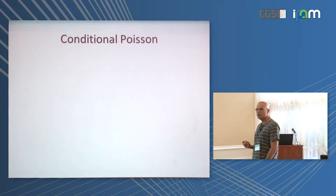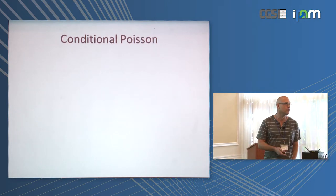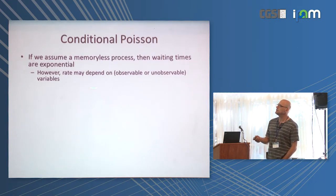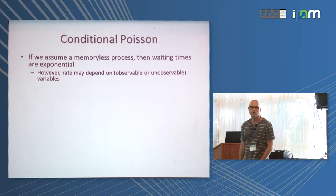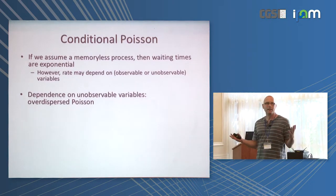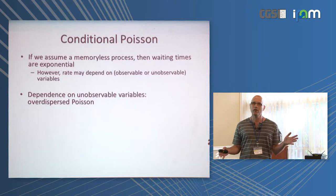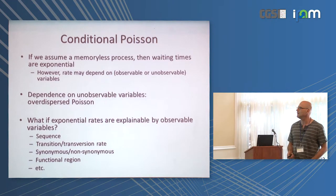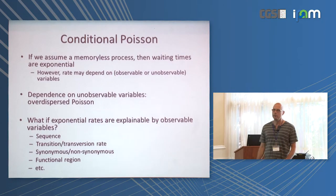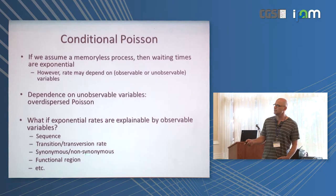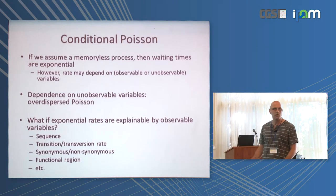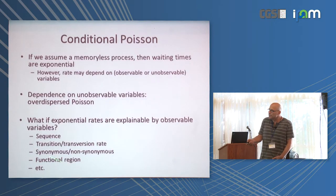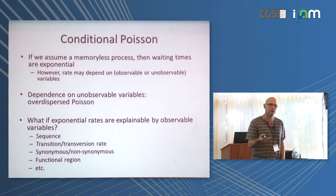Our goal is to understand the variables affecting the mutation rate. We assume a memoryless process with exponential waiting times, but the rate depends on variables which may be observable or unobservable. If it depends on unobservable variables, we have this over-dispersed Poisson negative binomial view. What happens if rate changes are actually explainable by observable variables — like the sequence, whether we're counting transitions or transversions, synonymous vs. non-synonymous mutations, or which region of the mitochondrial genome we're in? In that case, if we properly condition on these variables, we may actually be back to having Poisson processes, conditional on the variables that explain why Poisson rates differ.